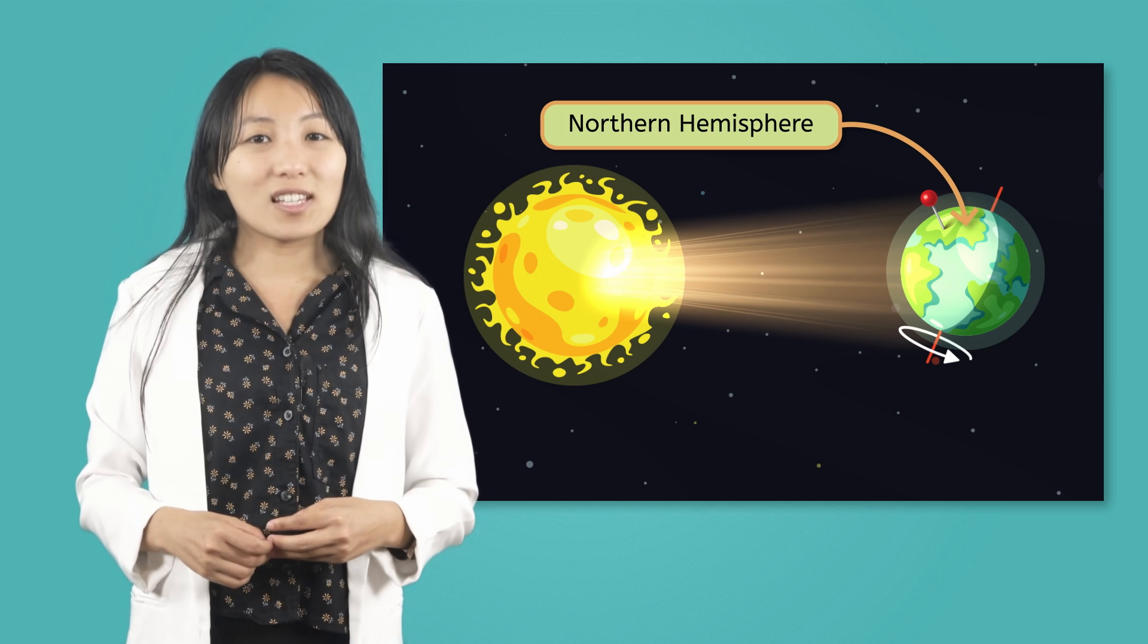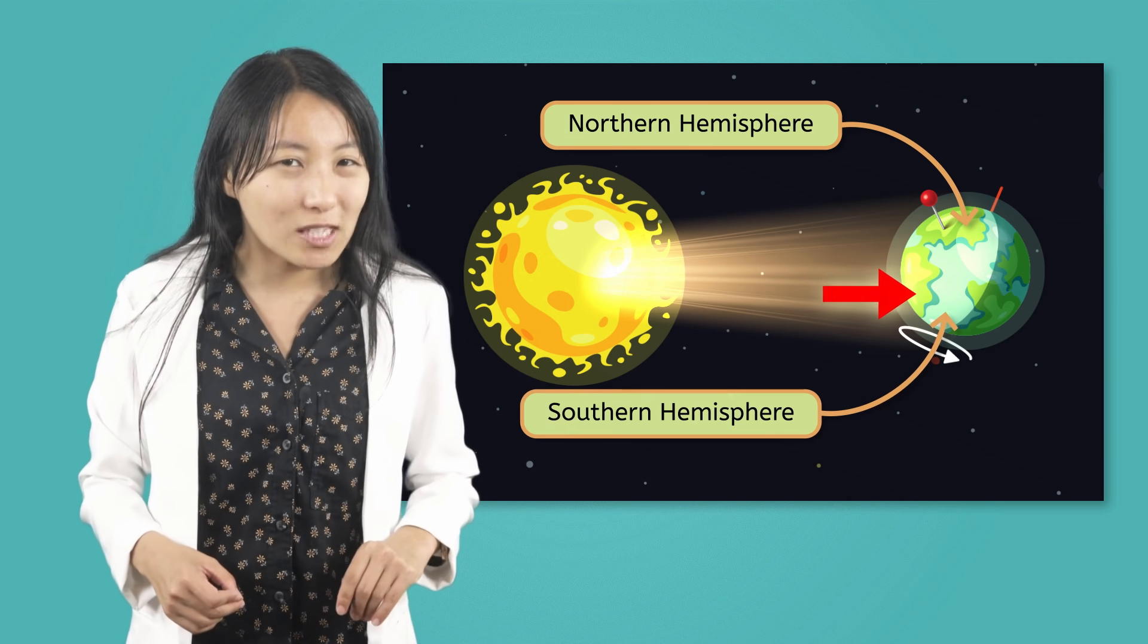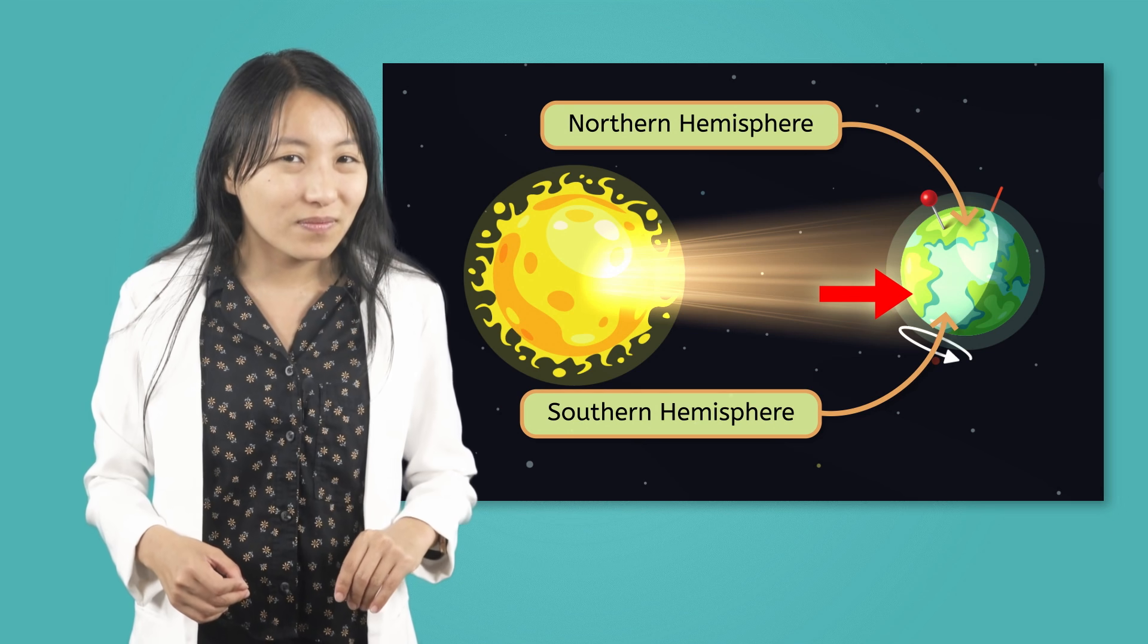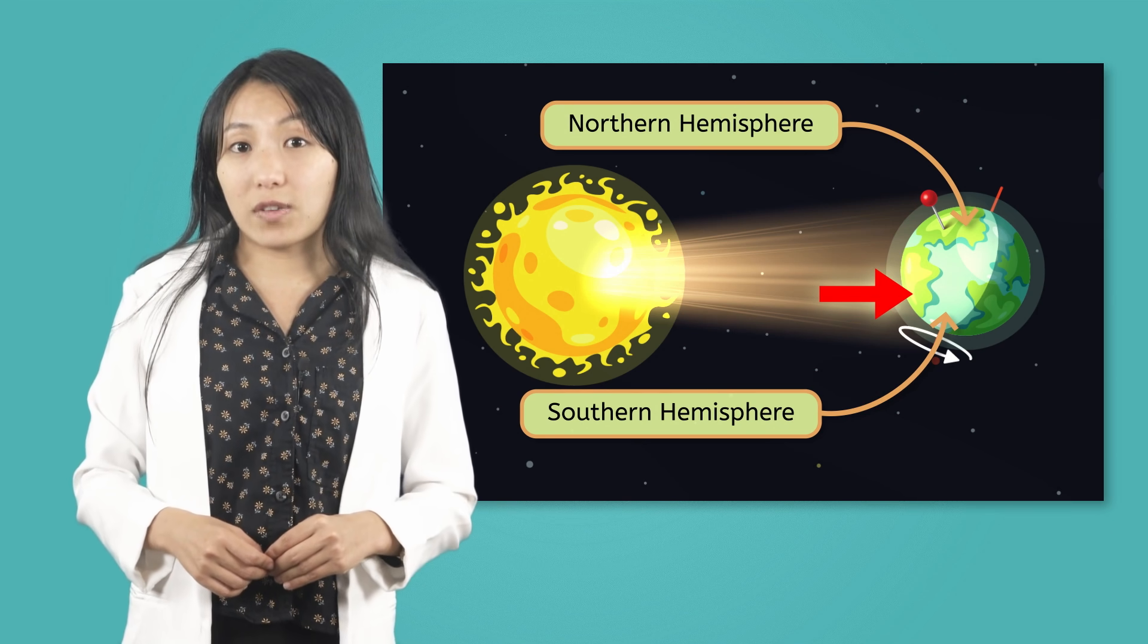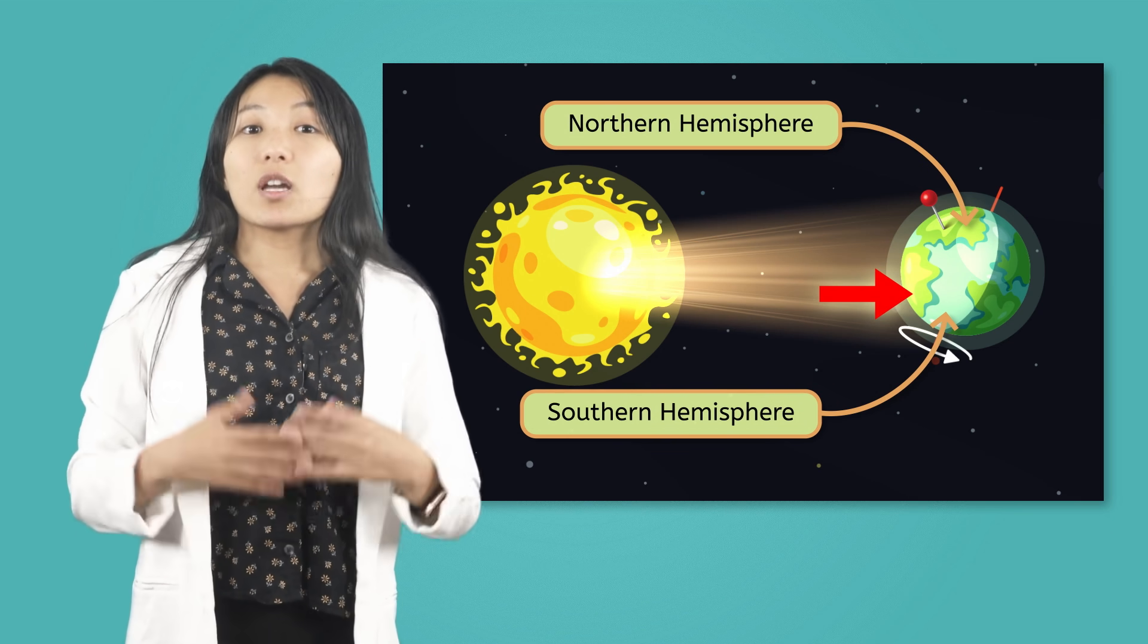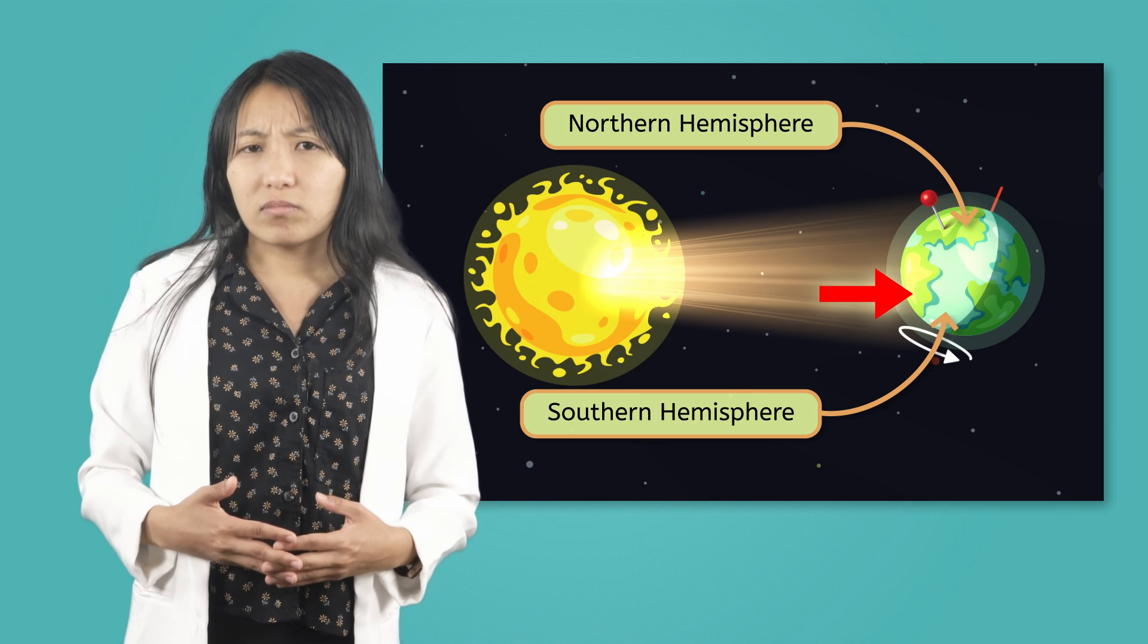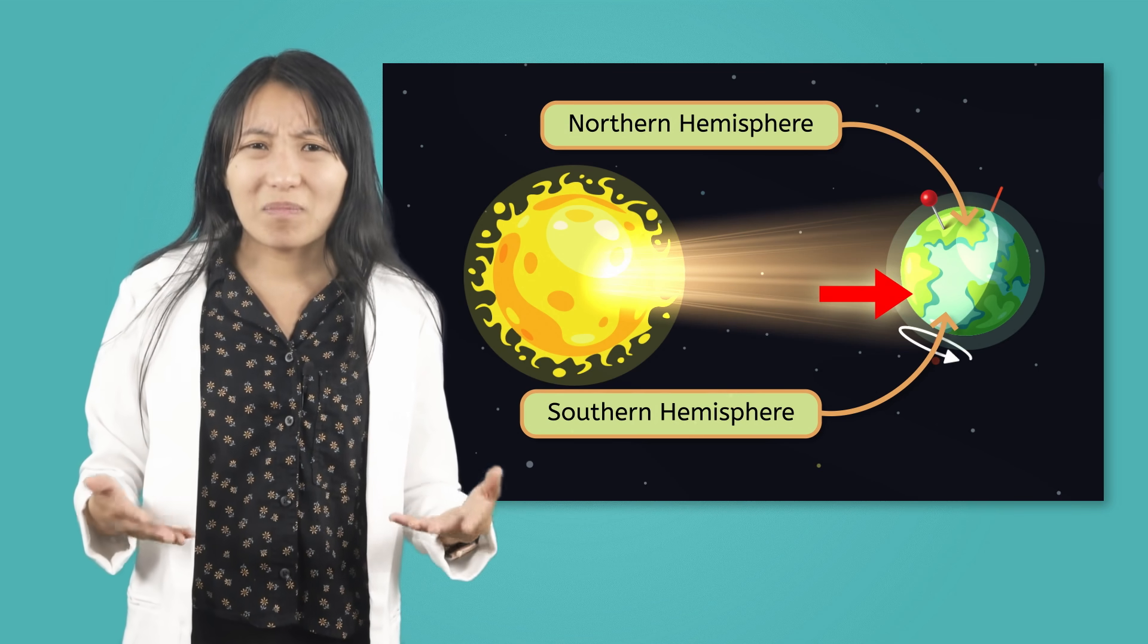We know that I am experiencing winter here, but what do you notice about the Southern Hemisphere? The lower half of the Earth, or the Southern Hemisphere, is tilted toward the Sun and is receiving more direct sunlight. That means it isn't winter there, but how can that be?